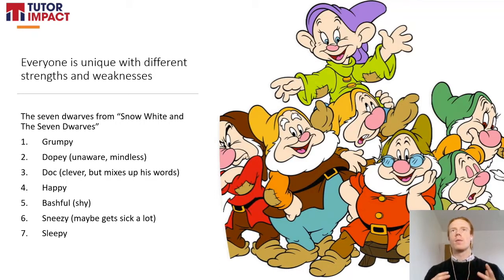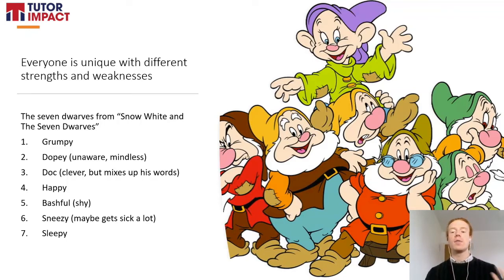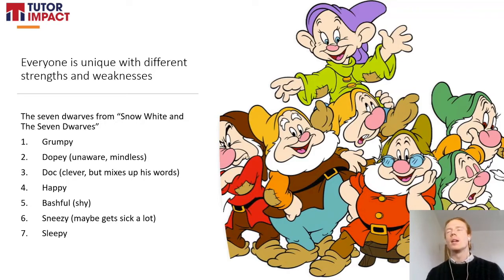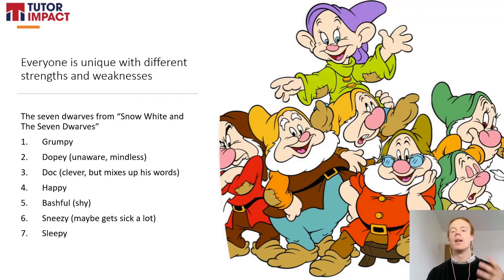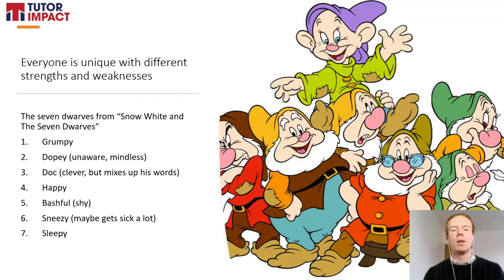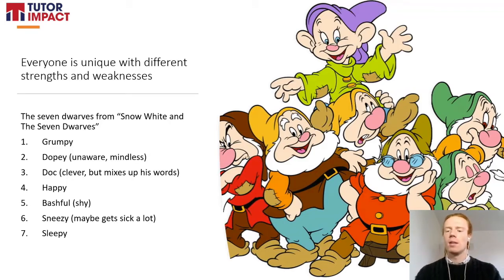The first concept we're going to be discussing is that everybody is unique. This means that we have different strengths and different weaknesses — no two people are exactly the same. A good way to illustrate this point are the seven dwarves from Snow White and the Seven Dwarves, which is a famous Disney film.